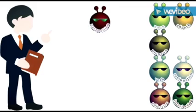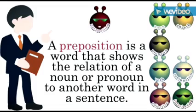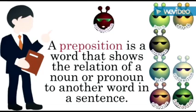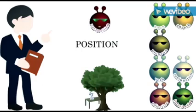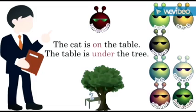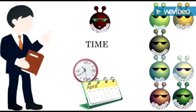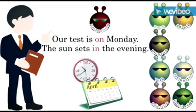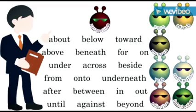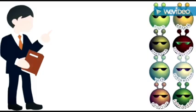Sure! A preposition is a word that shows the relation of a noun or pronoun to another word in the sentence. A preposition can tell the position of something: 'The cat is on the table. The table is under the tree.' A preposition can tell time: 'Our test is on Monday. The sun sets in the evening.' Here are some common prepositions. We have a separate video where we tell you everything about prepositions.